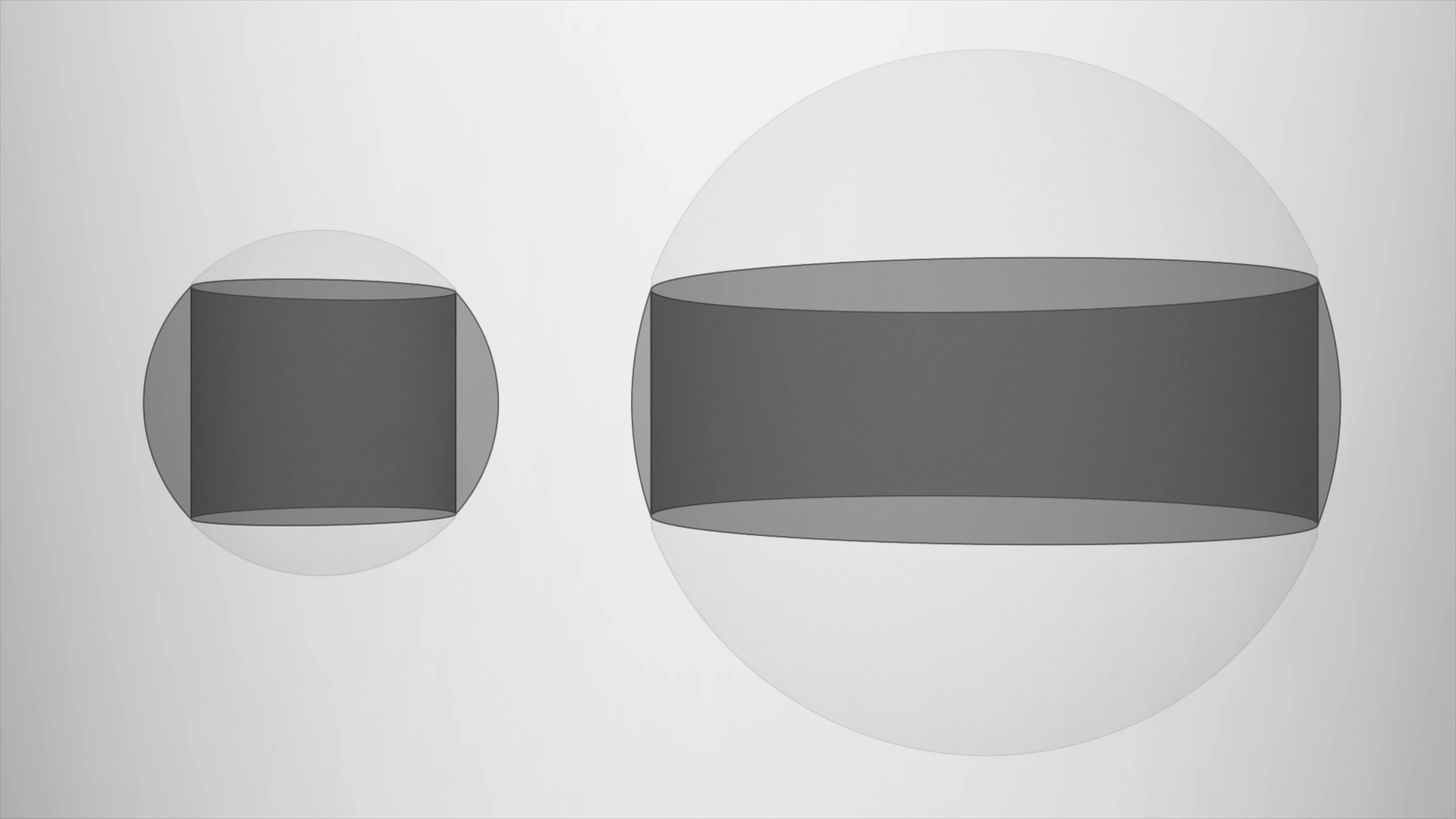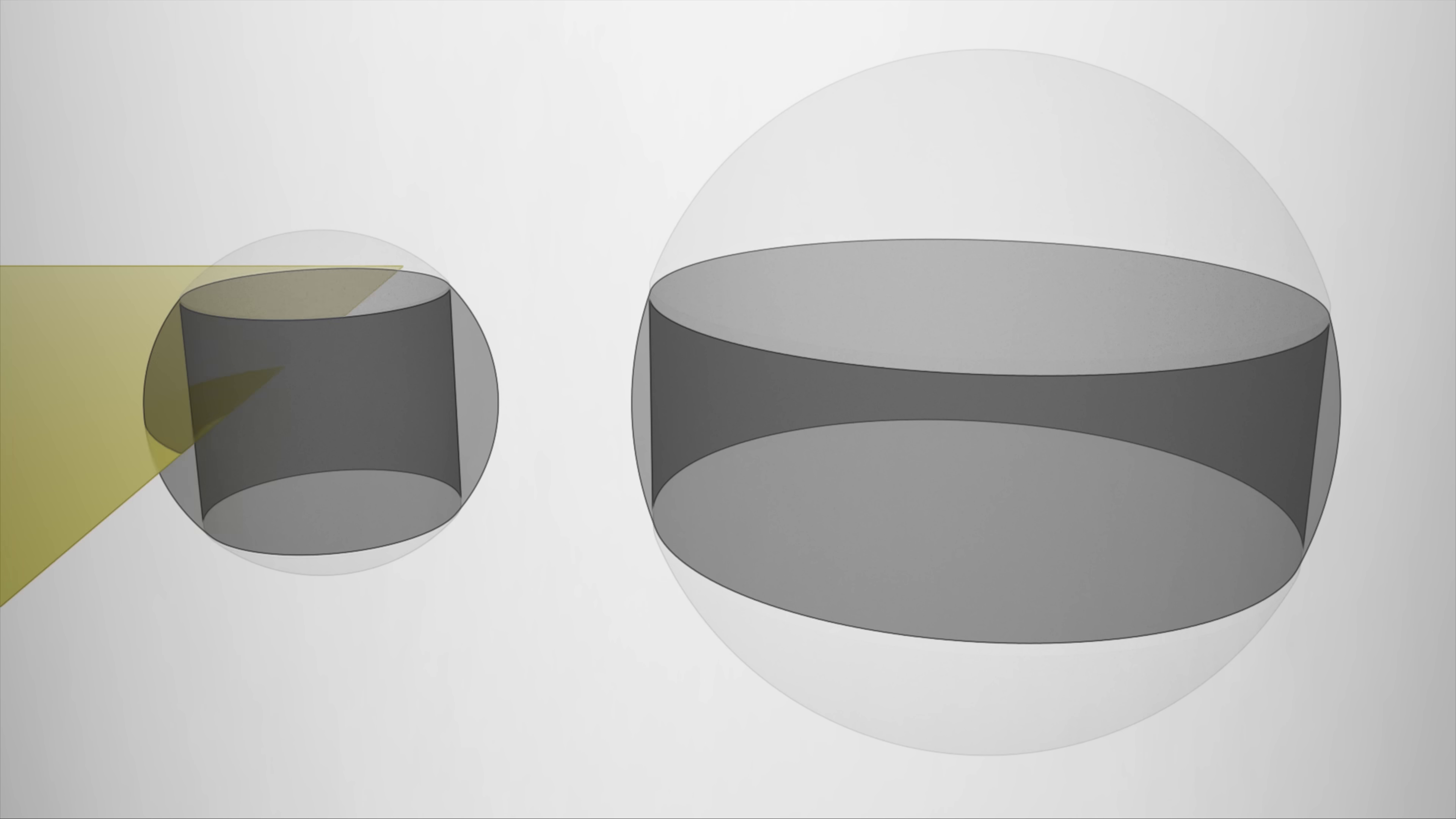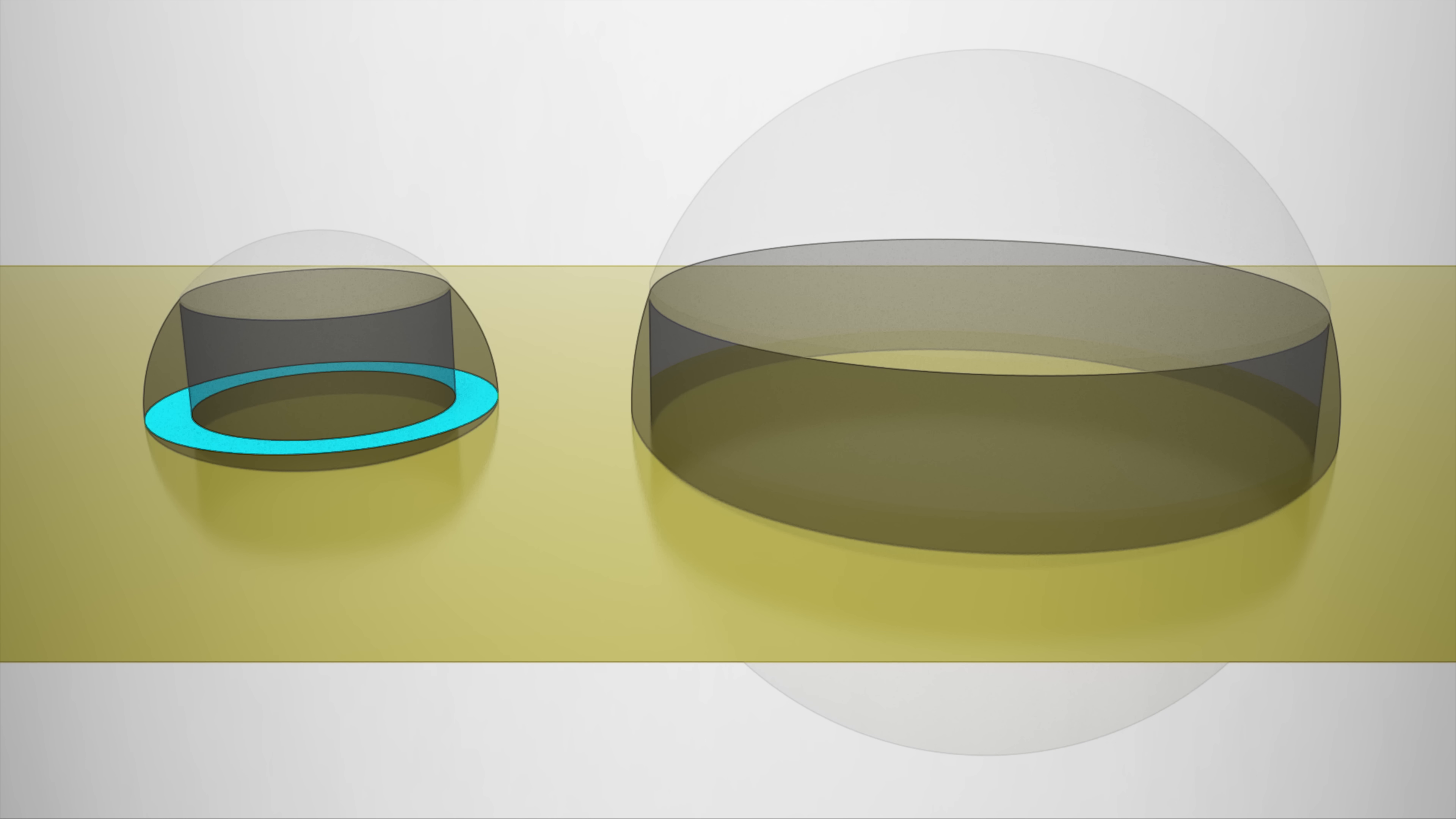Now let's apply Cavalieri's principle to napkin rings. We can see that two napkin rings with similar heights have identical volumes by showing that when cut by a plane, the area of one's cross section always equals the area of the others.